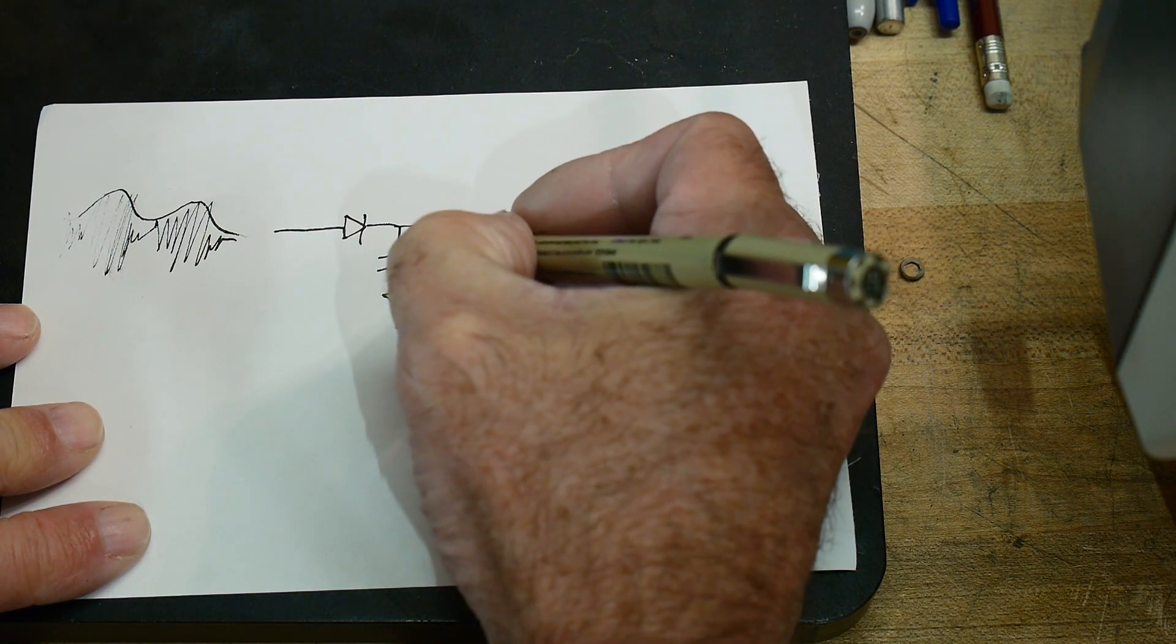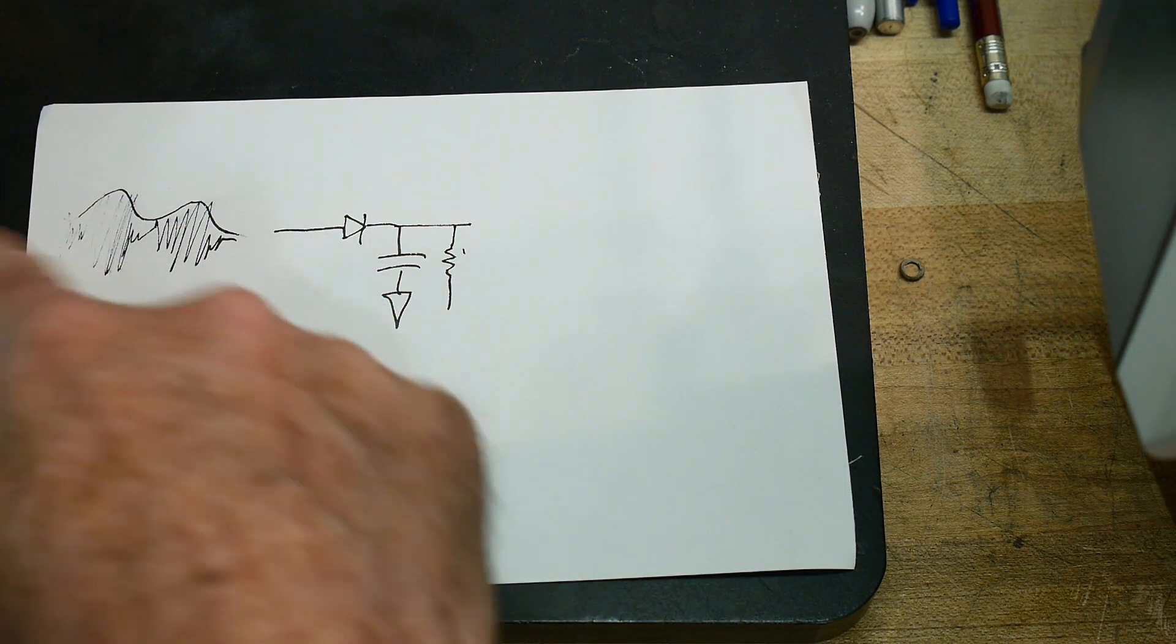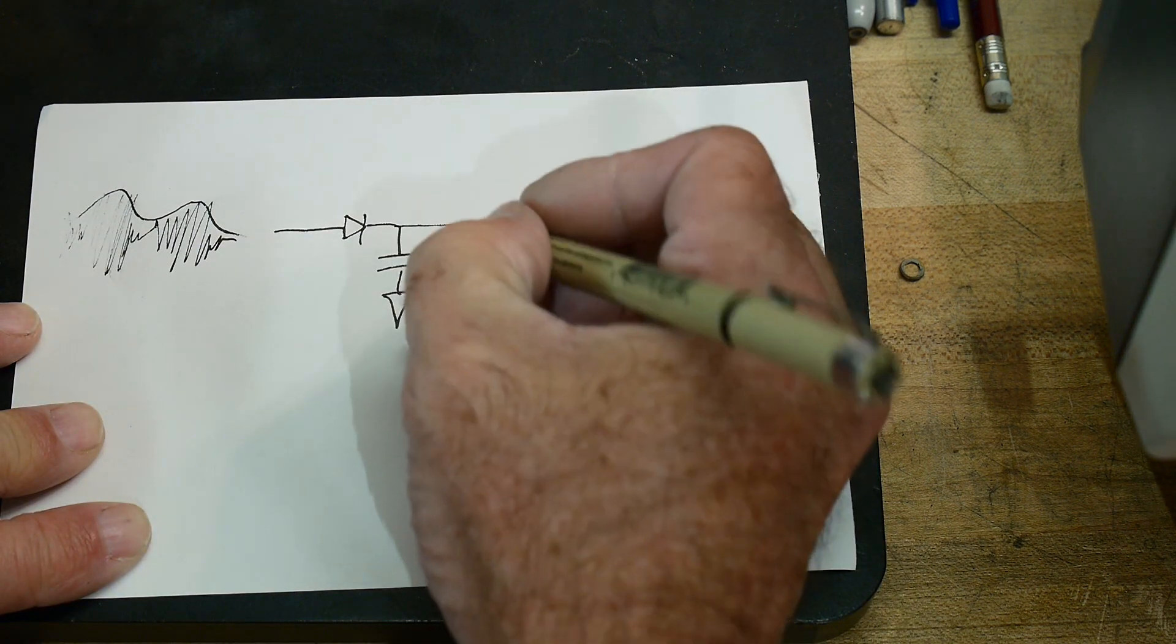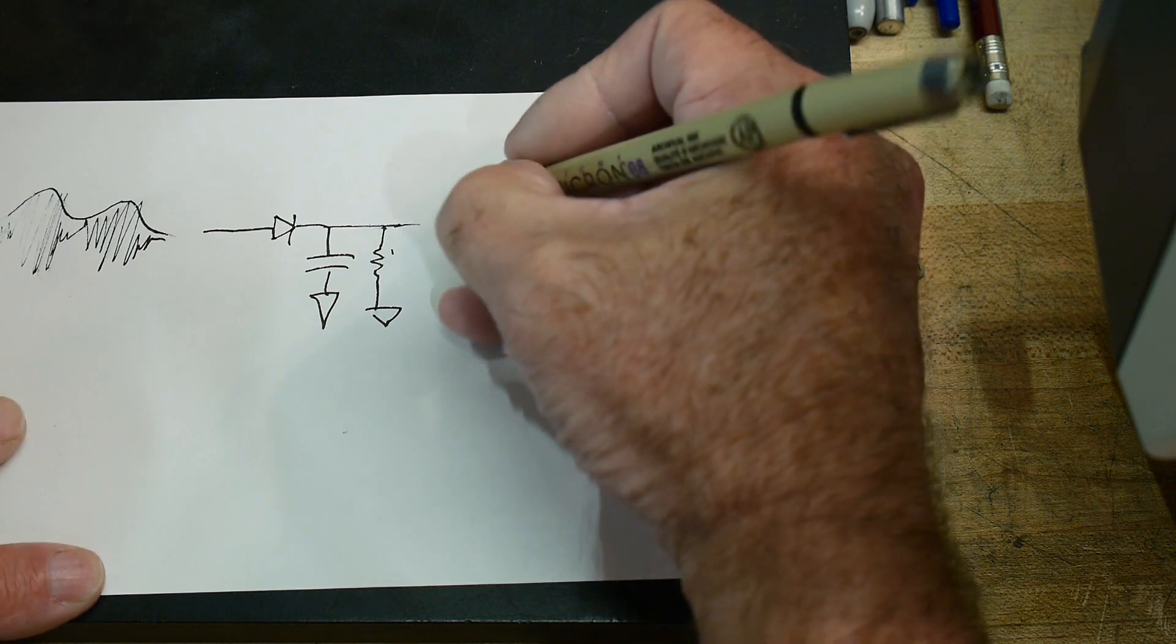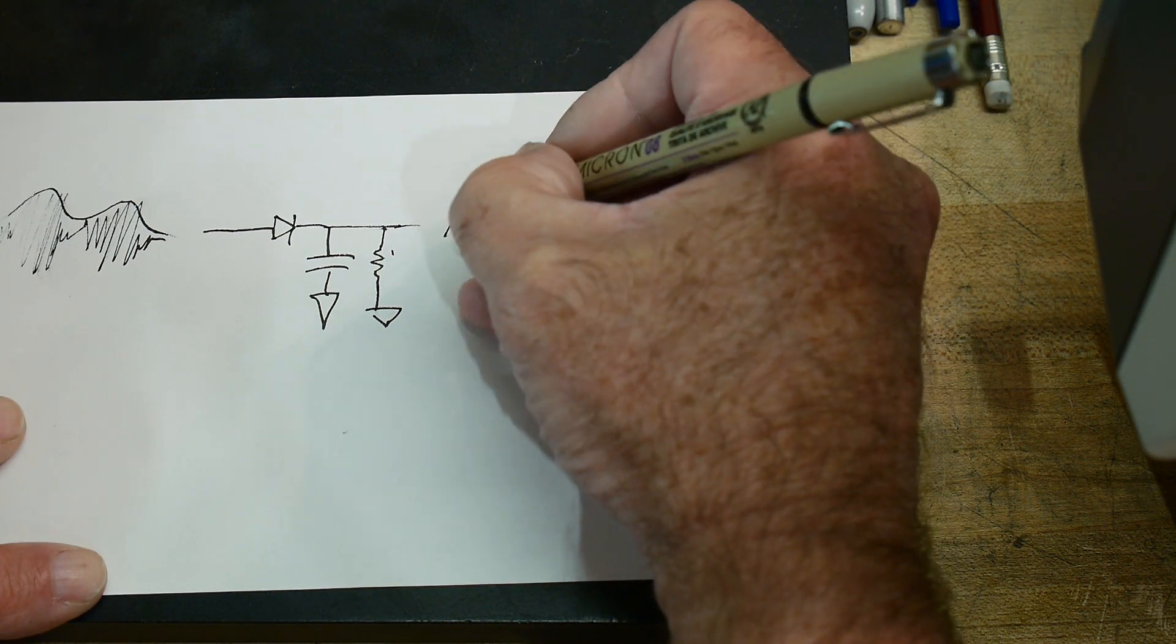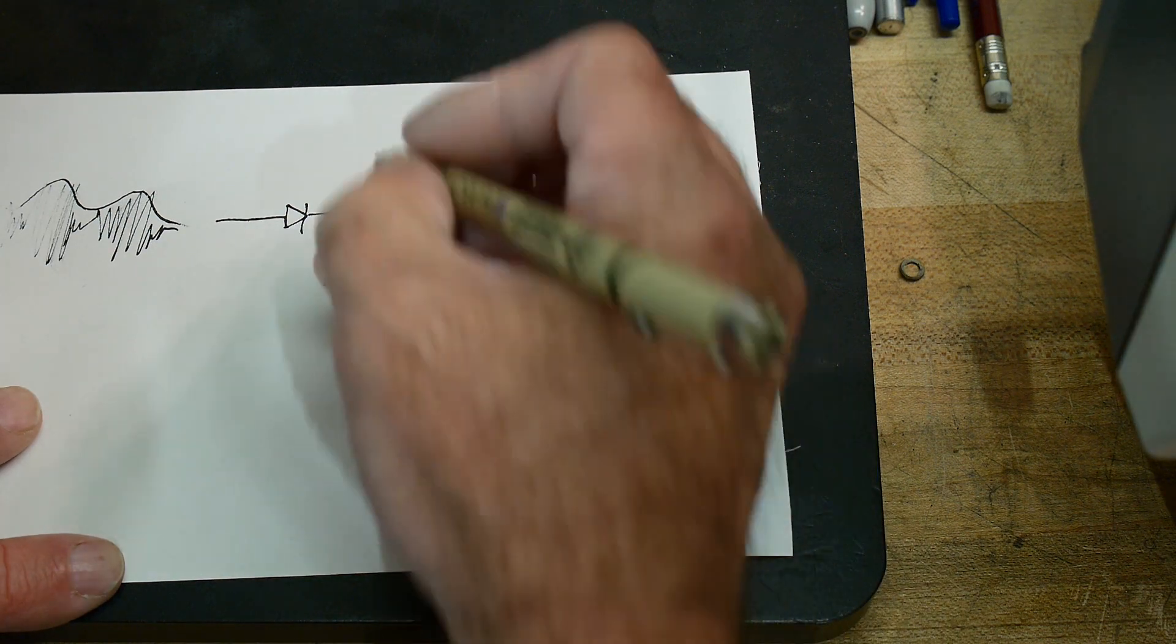And you might need to put a little resistor here to bring it back down. It might just go up and stay there. So you might want to have a resistor to pull it back down. But this is an AM demodulator, AM detector.